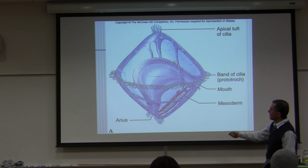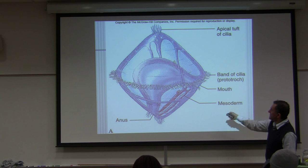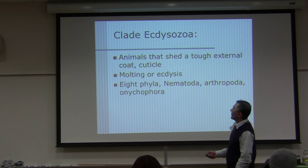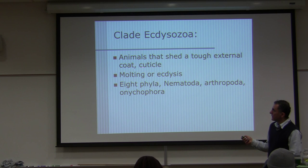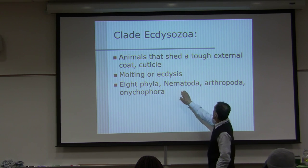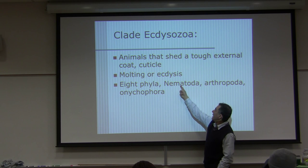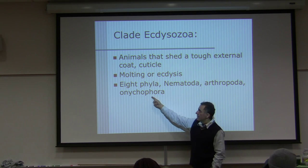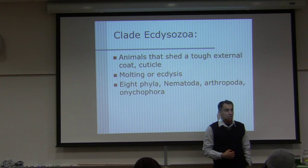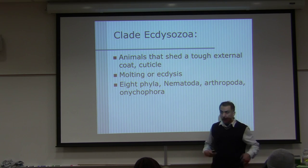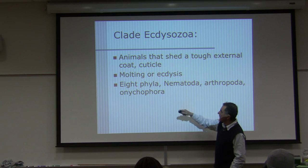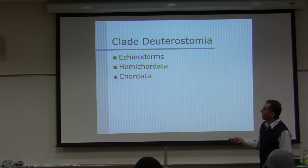This is a trochophore larva — it's ciliated in the middle, and that's what these animals have in common. Clade Ecdysozoa: animals that shed their tough external cuticle — molting, ecdysis — and there are eight phyla. Out of those eight, we are going to study three: nematoda, arthropoda, and onychophora. None of these three phyla are in this exam — I'm just giving a general overview of the three clades.